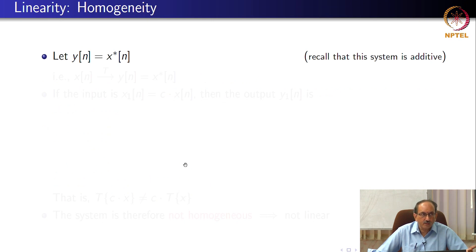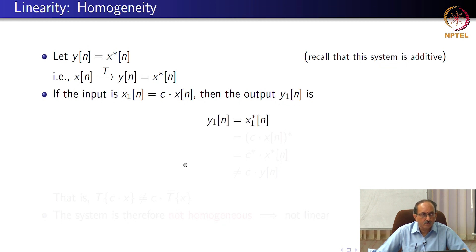So, now, let us take the previous example, y[n] equals x*[n], and this system was shown to be additive, right? So, if the input is now c times x[n], the output is, you have to take the input and complex conjugate it, correct? Therefore, the output is (c times x[n])*, which is c* times x*.